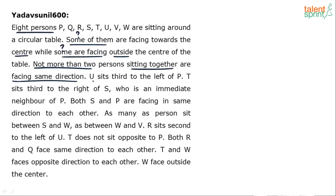Here are the clues: U sits third to the left of P. T sits third to the right of S, who is an immediate neighbor of P. Both S and P face the same direction. As many persons sit between S and W as between W and V. R sits second to the left of U. T does not sit opposite to P. Both R and Q face the same direction. T and W face opposite directions. W faces outside the center.